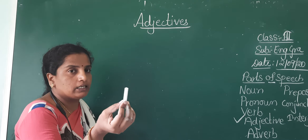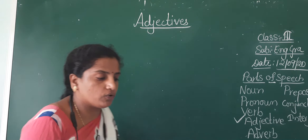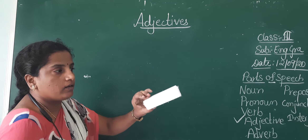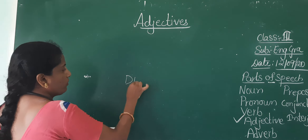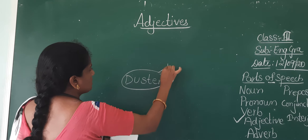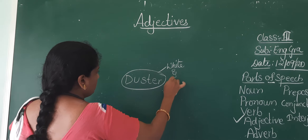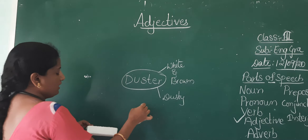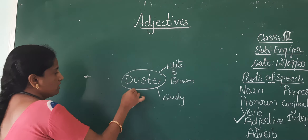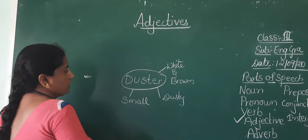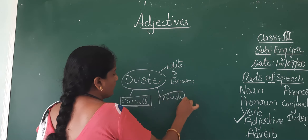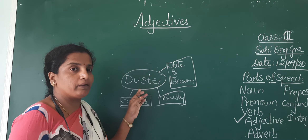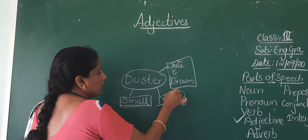Suppose, children, this is a duster. How is this duster? Duster is brown and white in color. Duster is dusty. And the duster is smart. These words — white, brown, dusty, smart — express or tell us about the noun 'duster.' So these words are known as adjectives.